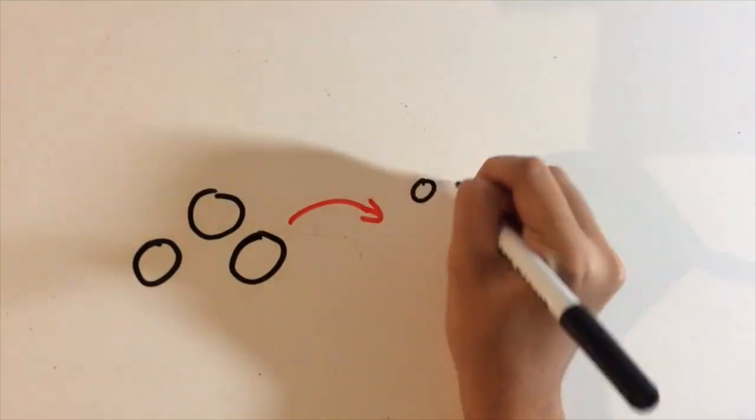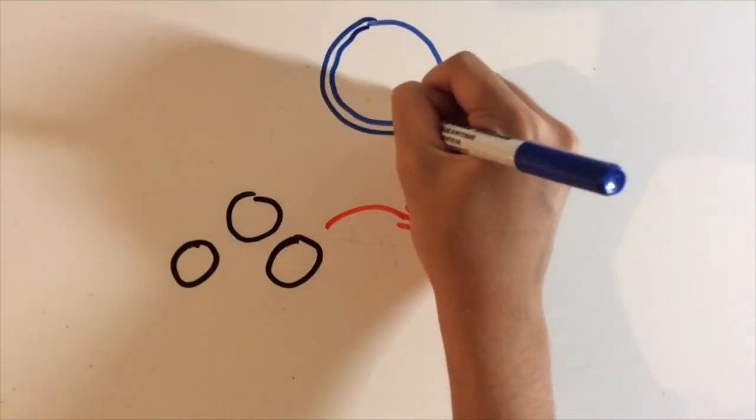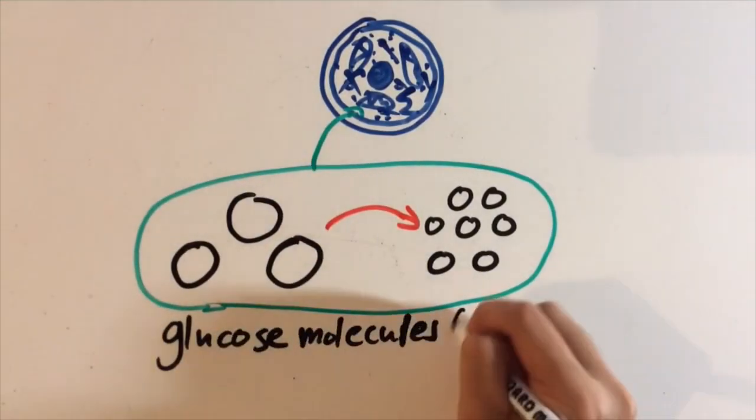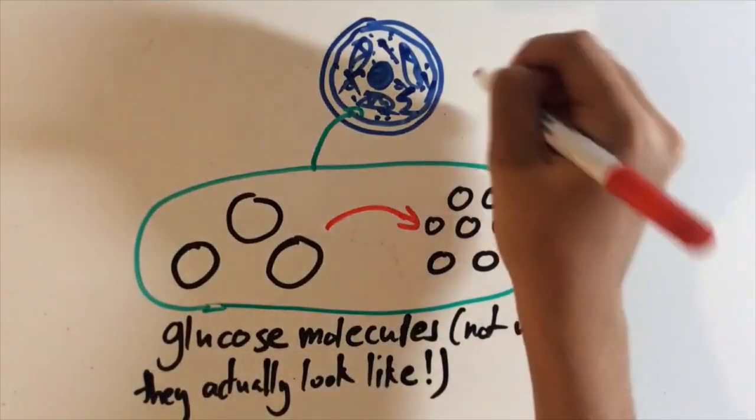During the first stage, glucose molecules are broken down into smaller molecules, releasing a small amount of energy as ATP. This occurs in the cytoplasm of the cells.